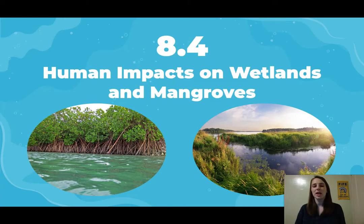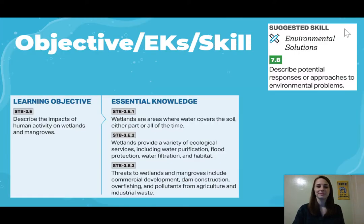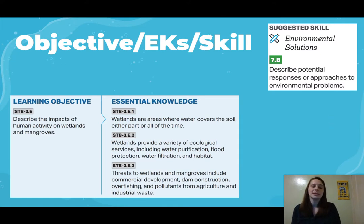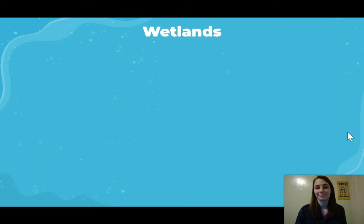Today we're going to be talking about section 8.4, which is on human impacts on wetlands and mangroves. The learning objective is that you can describe the impacts of human activity on wetlands and mangroves. The essential knowledge includes background on wetlands, the ecological services they provide, and threats to wetlands and mangroves.